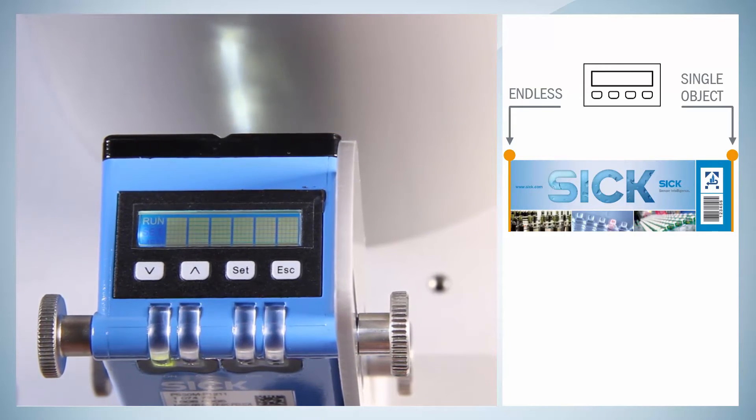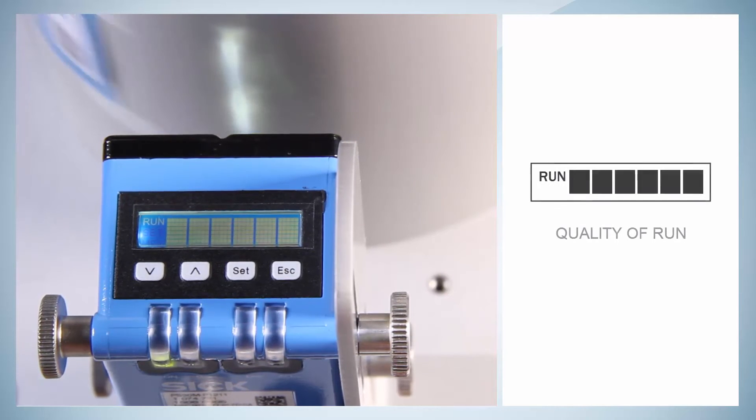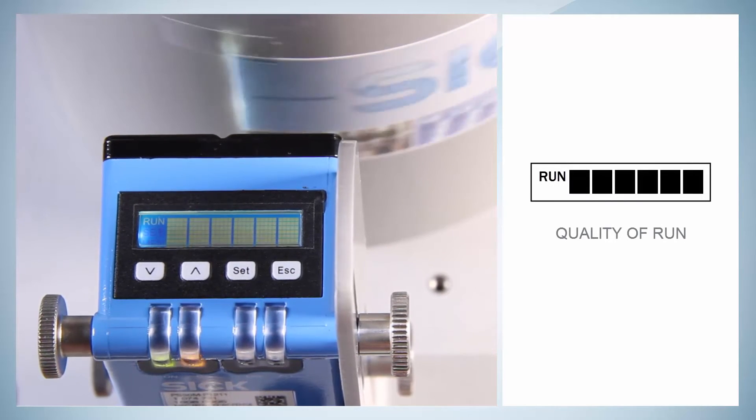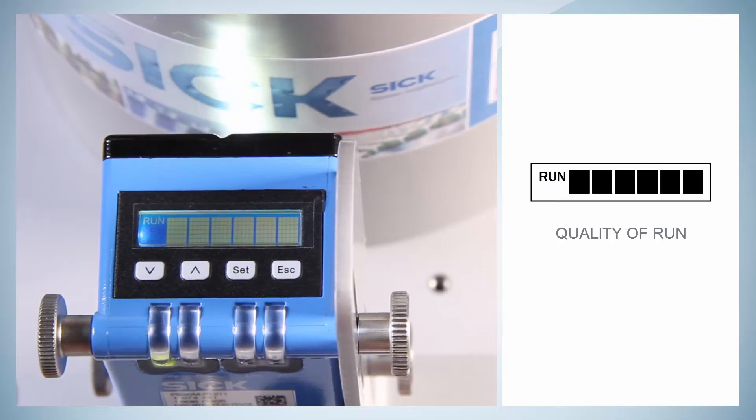After a few rotations, the bars stop blinking and represent not any longer the quality of the teach, but the quality of run, which means the quality of label detection.